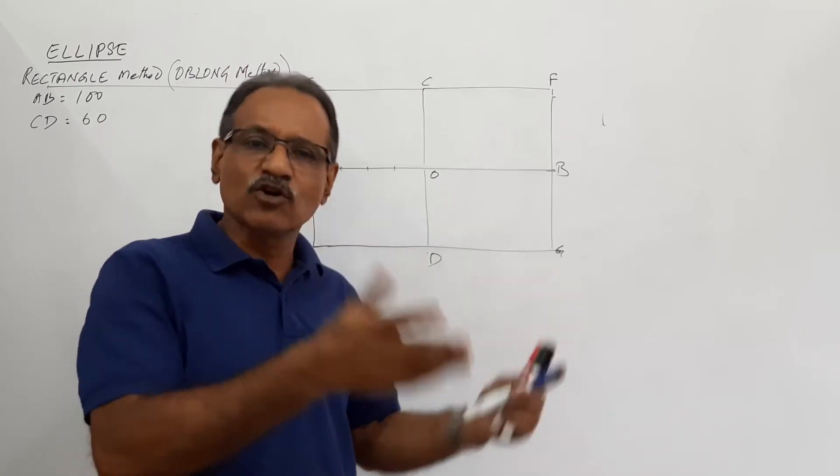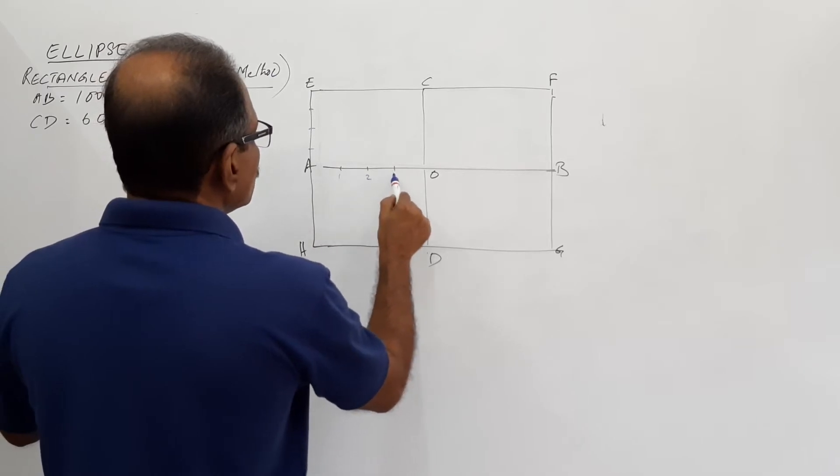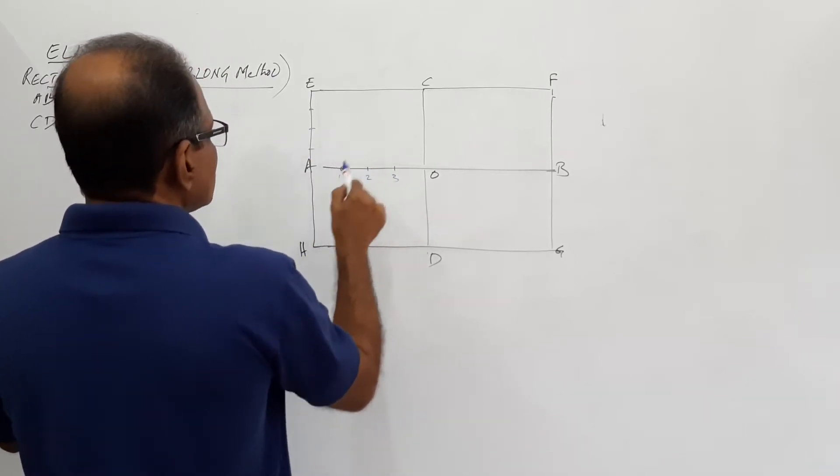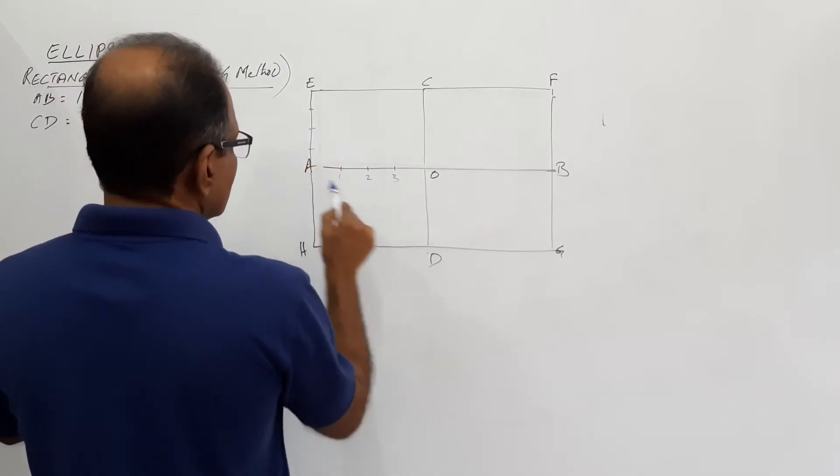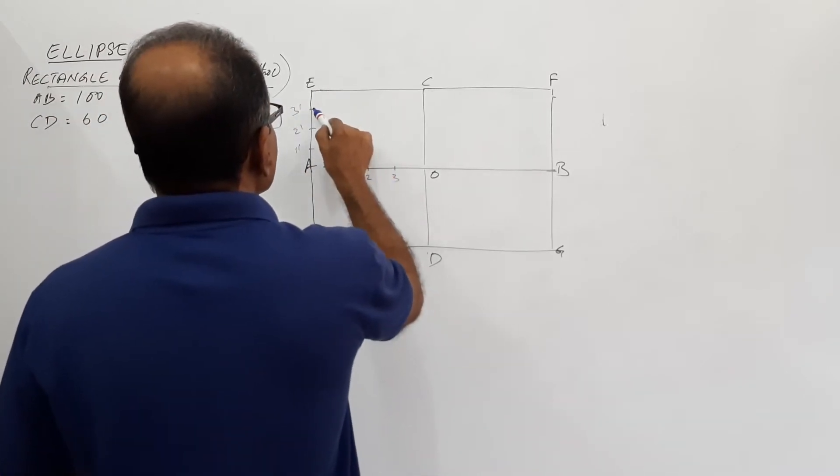30 can be divided into 4 equal parts of 7.5 mm. That also is manageable. But if you prefer, you can go for procedure of dividing. And name this as 1, 2, 3. Name this as 1 dash, 2 dash, 3 dash. Join 1 dash, 2 dash, 3 dash to C.